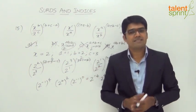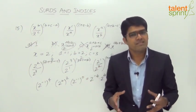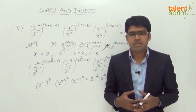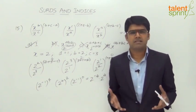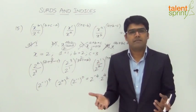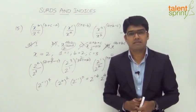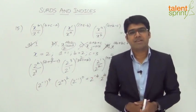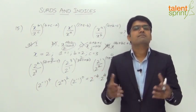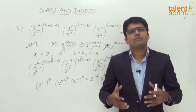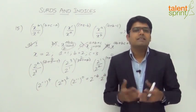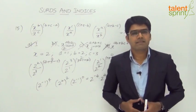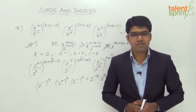With this question, we come to the end of this session on surds and indices. We have covered all the varieties of questions that can be asked from this topic in cognitive exams. Practice is the key — work on different types of questions. The approach is what matters: simplifying expressions, arranging surds in order, rationalizing, and equating powers when bases are equal. Keep practicing. See you in the next session. Thank you.